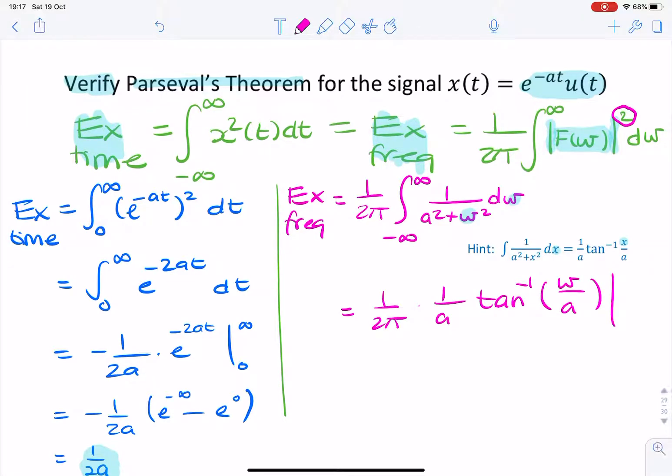And the limits are from minus infinity to infinity. So that's 1 over 2 pi a times tan inverse of infinity minus tan inverse of minus infinity.